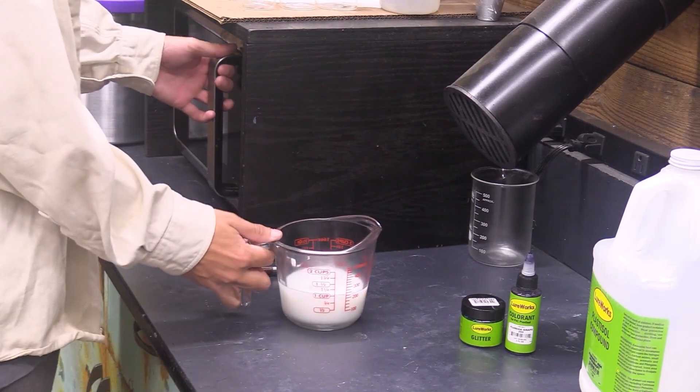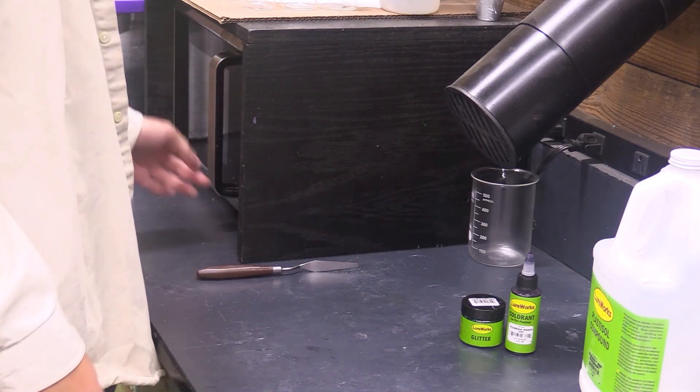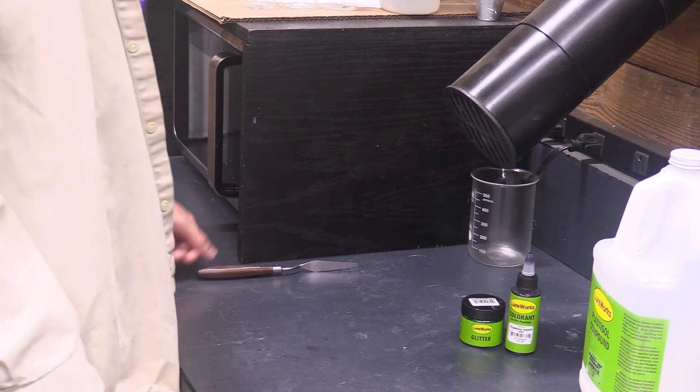Now that your plastic is poured we're going to throw it in the microwave. I usually like to start it off for about a minute and then up to 30 second intervals until it gets the consistency that you want.